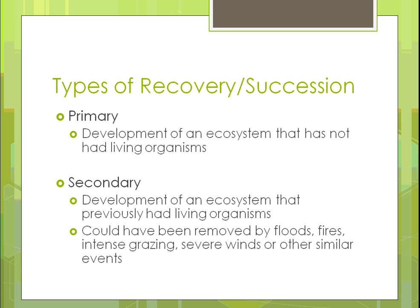On recoveries, or succession, there are two types: primary and secondary. Primary is when there's an ecosystem that hasn't had living organisms in it before — the first time an ecosystem is developing. That would probably be in an area where the climate changed so something couldn't exist and now it can — like after the ice age when nothing would grow. Rock can eventually turn into soil, and when it can support organisms, that's what a primary ecosystem is.